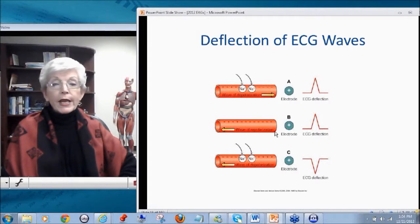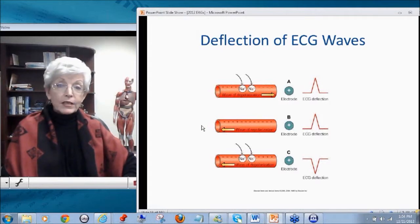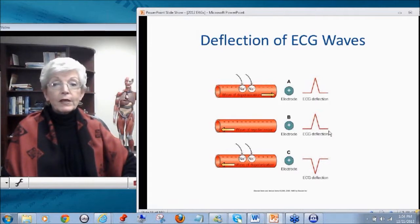If the wave of repolarization is going away from the positive electrode, you will also get a positive deflection. For example, if we have a positive QRS, because the wave of depolarization is coming towards a positive electrode, the depolarization is going away from it, we also get the T wave is positive.